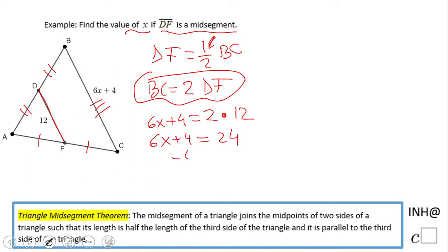Subtract 4 and we get 6x equals 20, divided by 6. So x will be 10 over 3 if we want a fraction, or 3.33 if you want an approximation.